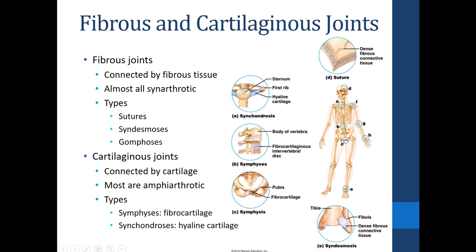Fibrous joints are connected by fibrous tissue — fitting for their name. They have tiny little connections between the bones, and nearly all fibrous joints are synarthrotic, meaning immovable. Examples include the sutures between our cranial bones and the syndesmosis at the distal tibia-fibula connection. There's also the gomphosis, which is your teeth in their sockets, found in both the maxilla and mandible.